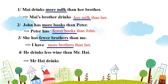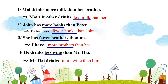Câu số 4: "He drinks less wine than Peter." – Ông ấy uống ít rượu hơn ông Hải. Điều này có nghĩa là ông Hải uống nhiều rượu hơn ông ấy. Chúng ta thấy: less wine đổi thành more wine.